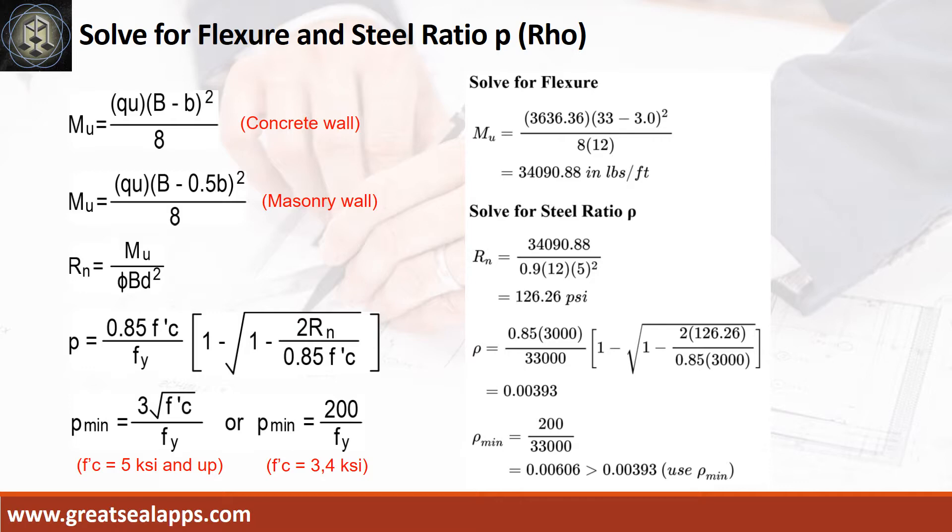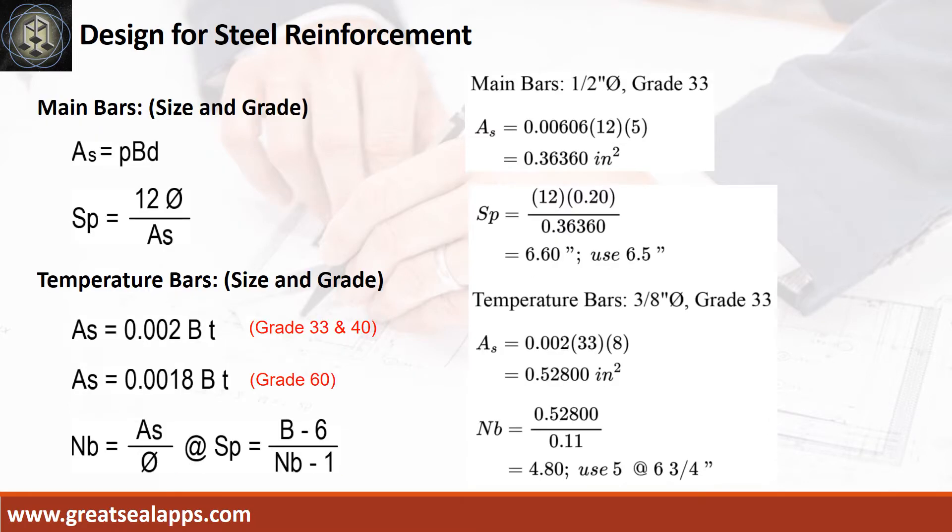Use Rho minimum of 0.00606. Given Rho equals 0.00606, B equals 12 inches, and D equals 5 inches, the area of steel for main bars is 0.3636 square inch, and the spacing for half-inch diameter bar is 6.5 inches.